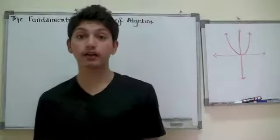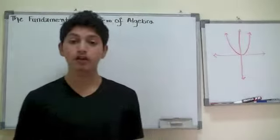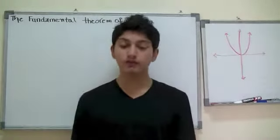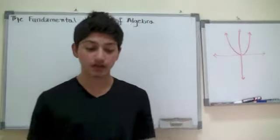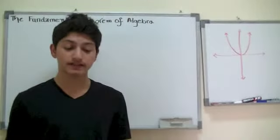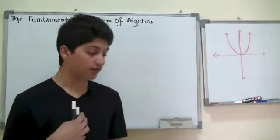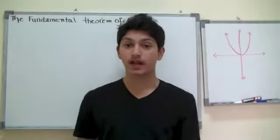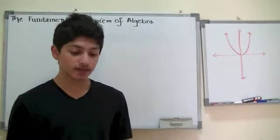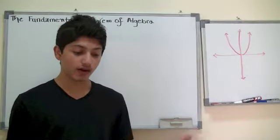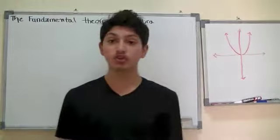Hey guys, this is Karan here. In this discussion of polynomial functions, up to this point we have corresponded the notion of a graph crossing the x-axis with zeros. That's fine if we are limiting ourselves to a real number line. Now if we have a function that has an x-intercept somewhere, we say that it corresponds with a factor.